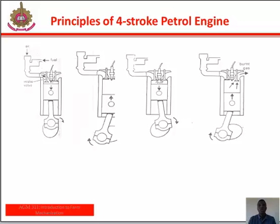The third stroke is called the power stroke. With the approach of the piston towards the top dead center in the second stroke, the mixture of fuel and air is ignited by a spark from the spark plug, causing it to burn. The resulting expanded gas pushes the piston from the top dead center to the bottom dead center. At this point, both the inlet and exhaust valves are closed.